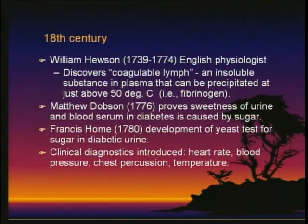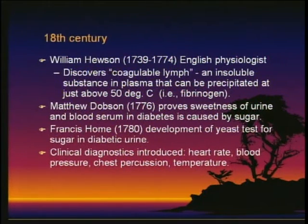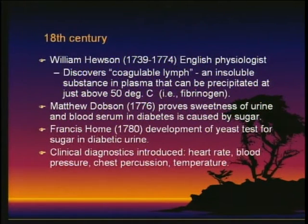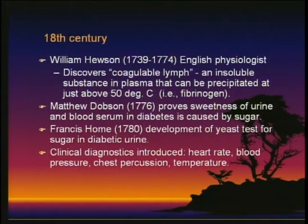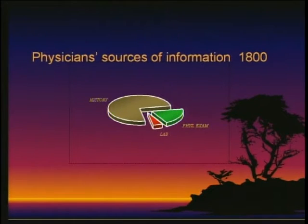An English physiologist named Houston discovered coagulable lymph — a substance precipitated at just above 50 degrees — which turns out to be fibrinogen. Dobson in 1776 actually proved the sweetness of urine and blood serum in diabetes is caused by sugar. Holm develops yeast tests for sugar in diabetic urine in 1780. Meanwhile, clinical colleagues were starting to realize that measuring heart rate, blood pressure, chest percussion, and temperature has clinical value. By about 1800, the majority of a physician's information came from history, with an increasing amount from physical examination, and a very small sliver from the laboratory.